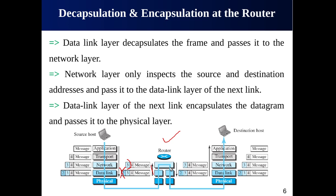The datagram is then passed to the data link layer of the next link, which performs the encapsulation process again — adding its own header in the form of new link layer information. This is again known as encapsulation. The data link layer of the next link encapsulates the datagram in a new frame and passes it to the physical layer for transmission.